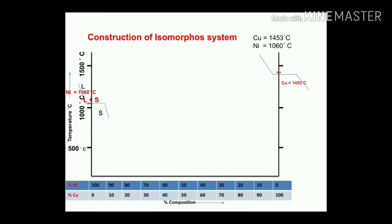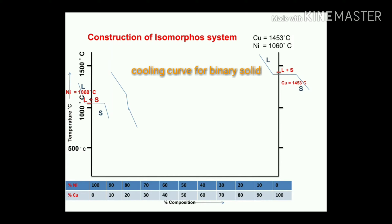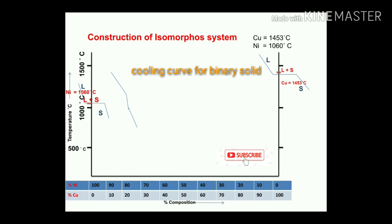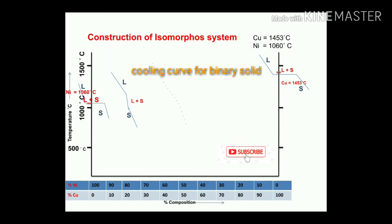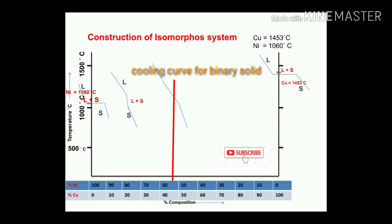For copper, the cooling curve similarly shows liquid, liquid plus solid, and solid. Now, for 80% nickel and 20% copper — acting as a binary solid solution — the cooling curve for binary solid metals shows: liquid, liquid plus solid, and solid. Similarly, for 60% nickel and 40% copper, it will again be liquid, liquid plus solid.